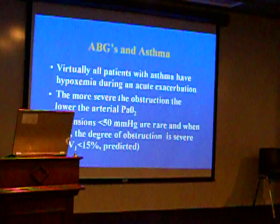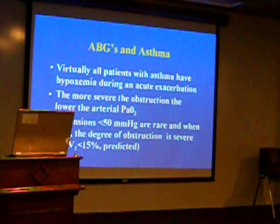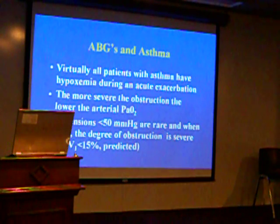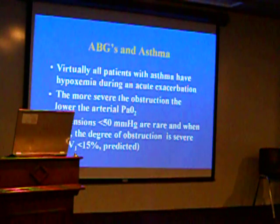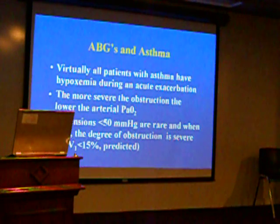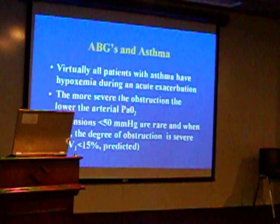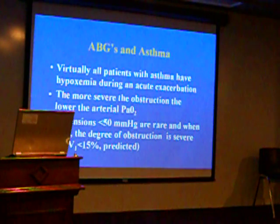So what's the pearl? Look for something else. That patient doesn't just have asthma, and usually the PO2 is not that severe. Do they have pneumonia, do they have pulmonary embolism with it, or maybe it's not really asthma, and so forth. So O2 tension less than 50 is rare.